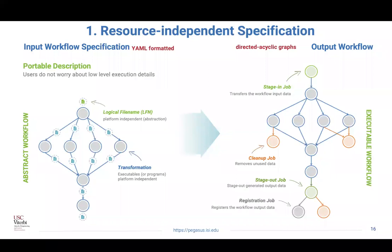During the development of Pegasus, we finalized five different principles that worked for us to move across various systems as they changed. The first is resource-independent specification: workflows exist in abstract form when scientists design them — they talk about logical file names and logical transformations. For example, 'I want to do an FFT on file A,' but you don't specify which resources to use or where the FFT or file is located. We use catalogs to figure that out. LIGO has data replica catalogs showing where data resides, and computing sites also advertise their resources so you can discover where transformations are located.